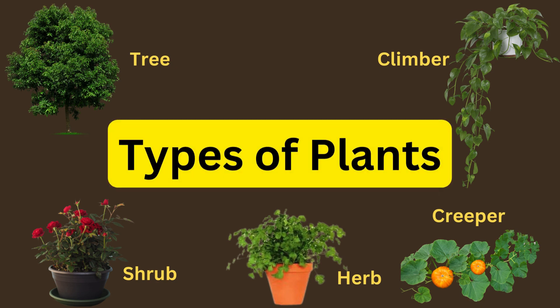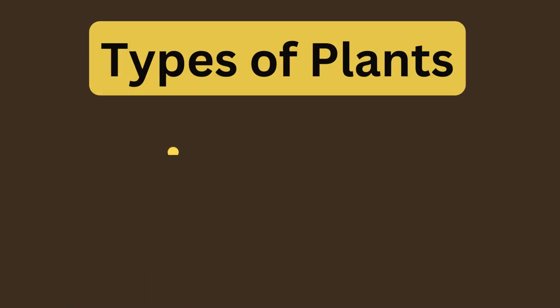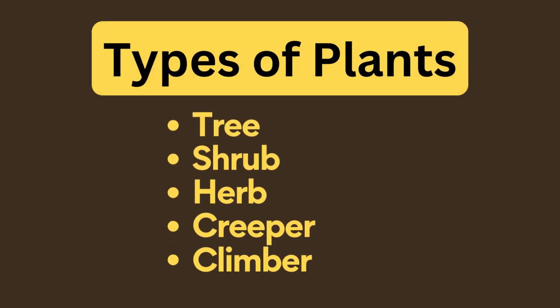In this video we are going to see the types of plants. There are five types of plants: tree, shrub, herb, creeper, and climber.